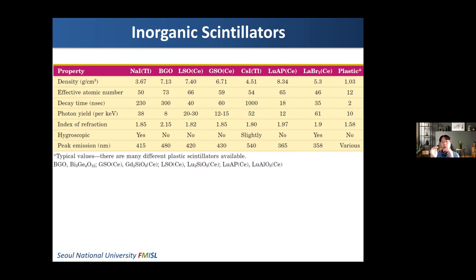Another property to consider is decay time — we prefer shorter decay time. If the decay time of scintillation light is too long, it does not disappear before the next event happens, causing baseline fluctuation of the output signal. In PET, because we do not use a collimator, the incident rate of gamma ray photons is much higher than in gamma cameras, so we need very fast scintillators like LSO. LSO has a much shorter decay time than BGO, which is why we prefer LSO for PET applications.